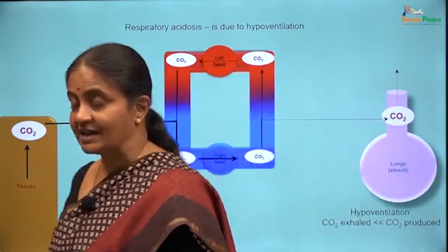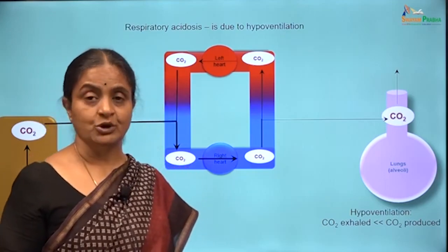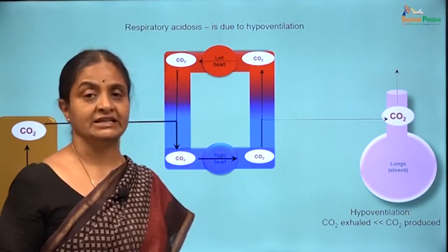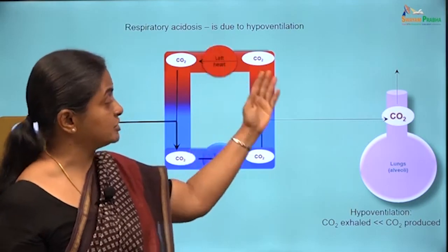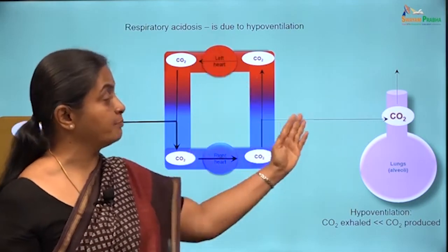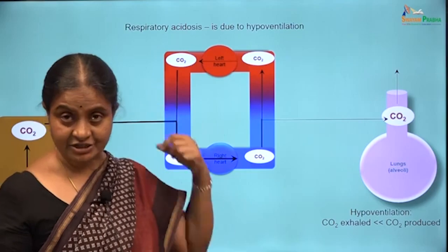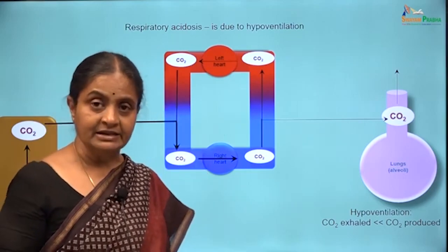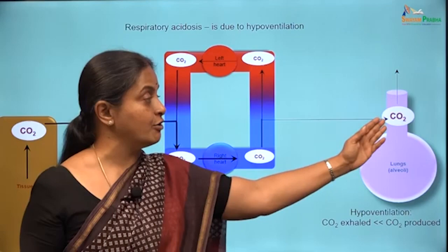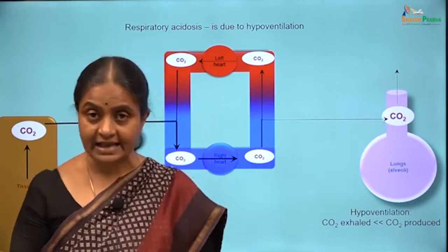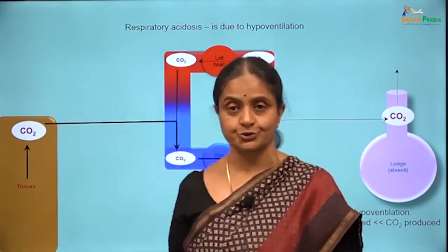Just like respiratory alkalosis comes up due to hyperventilation, respiratory acidosis is due to hypoventilation. The term hypoventilation technically refers to a state where the amount of carbon dioxide exhaled is less than what is produced.